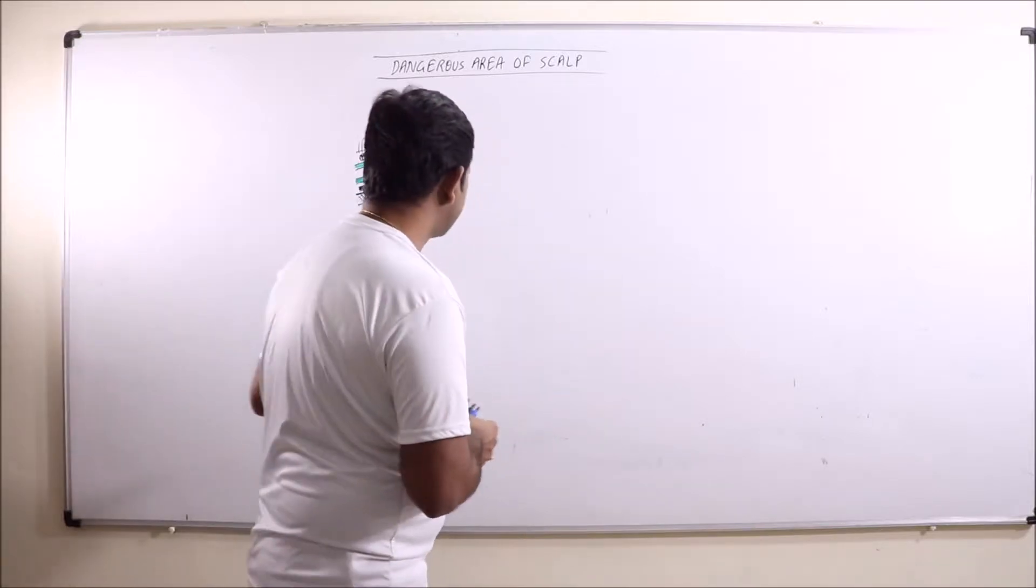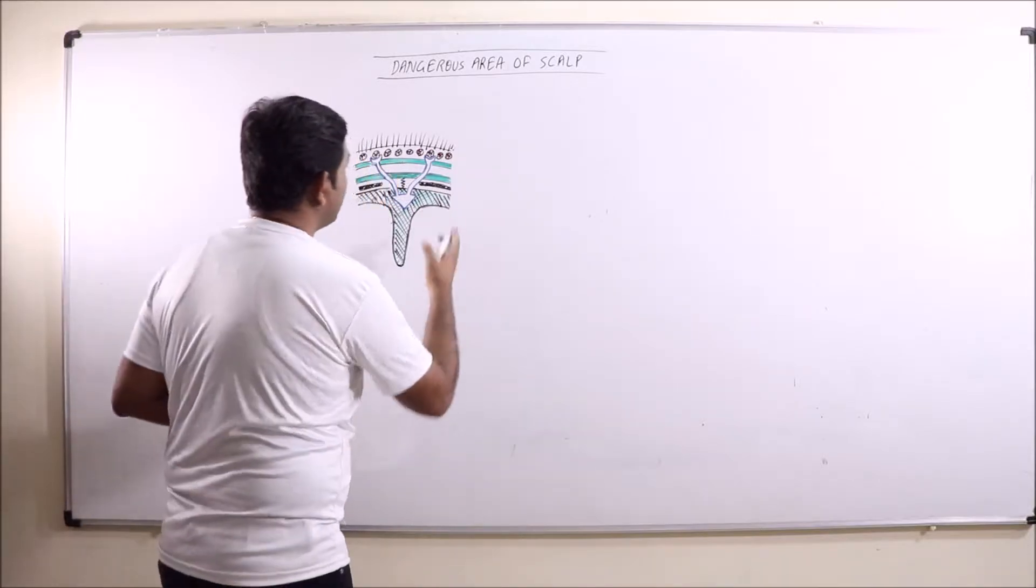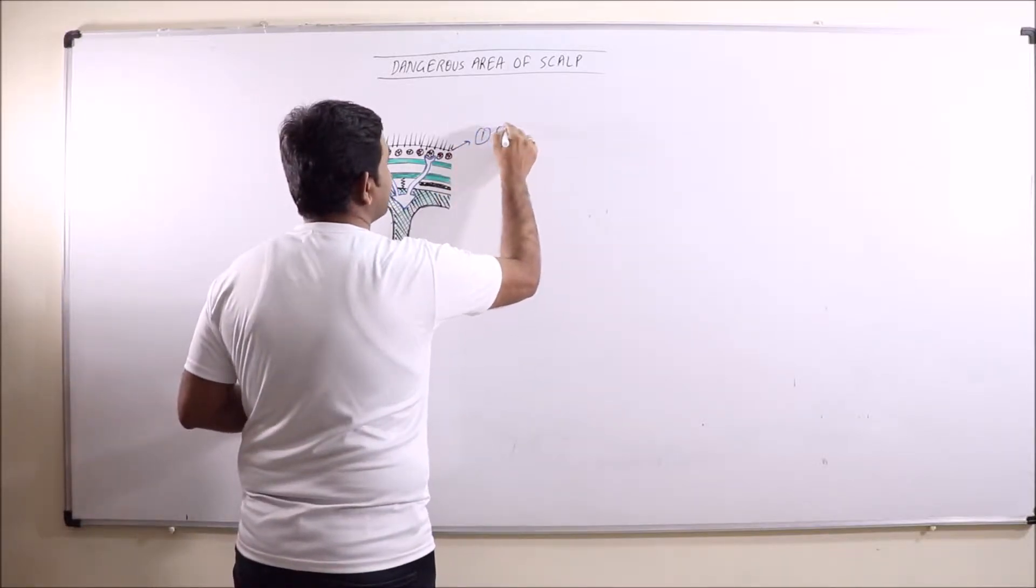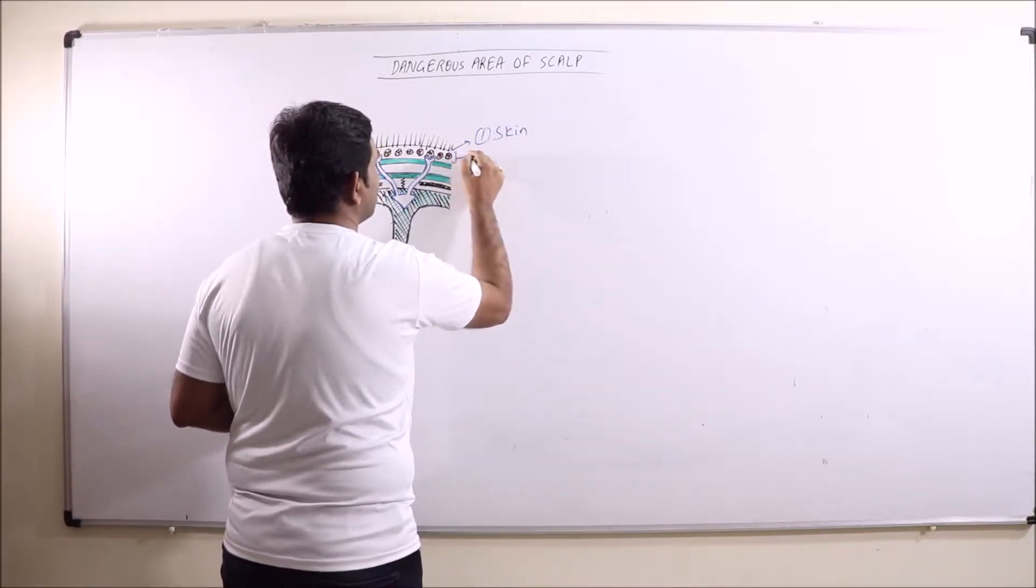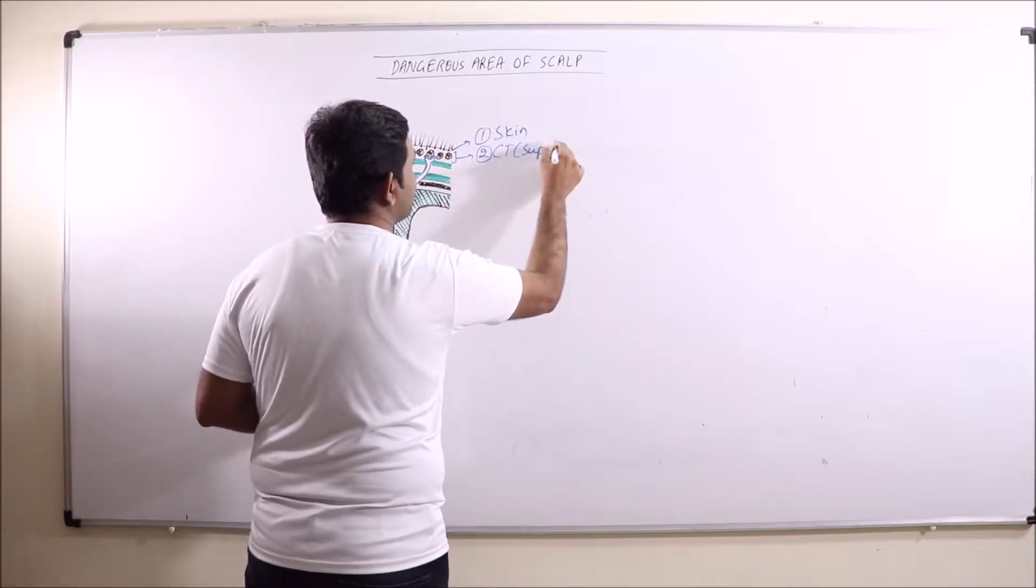Now what is dangerous area of scalp? We have discussed the various layers of scalp in previous lectures. We know that this layer is of skin, this is of connective tissue which is also the superficial fascia.